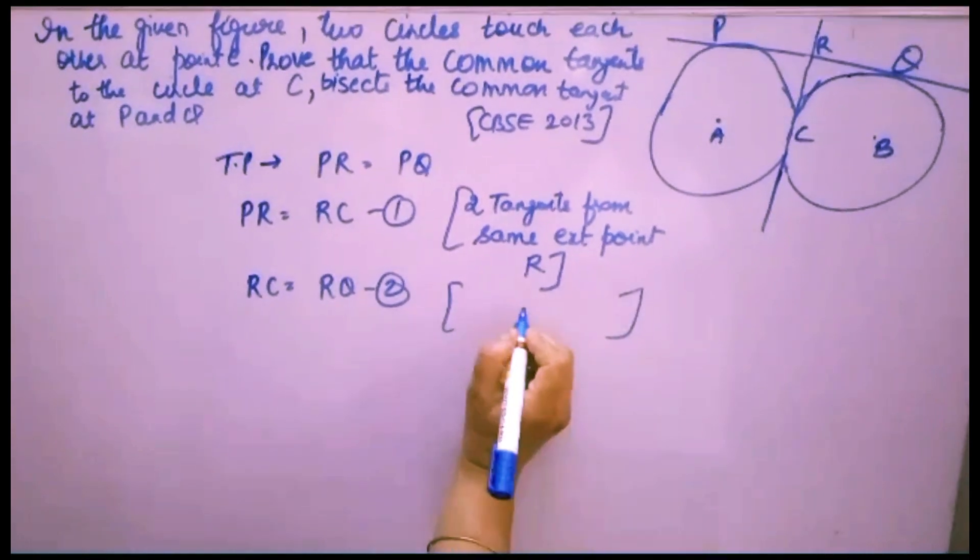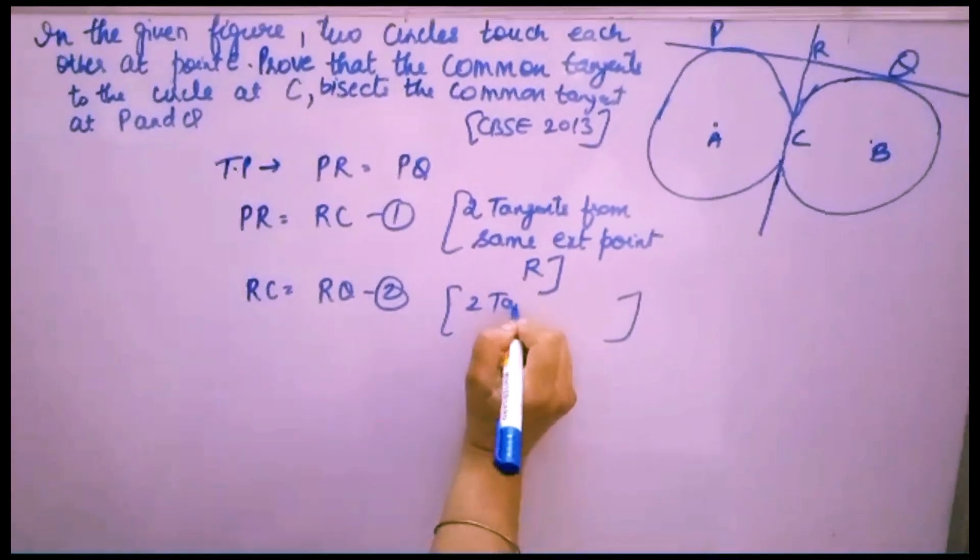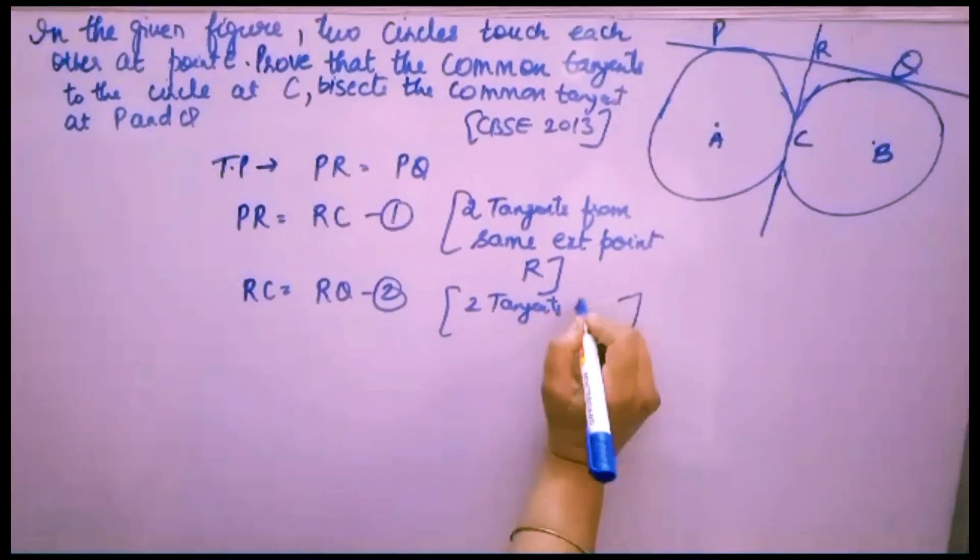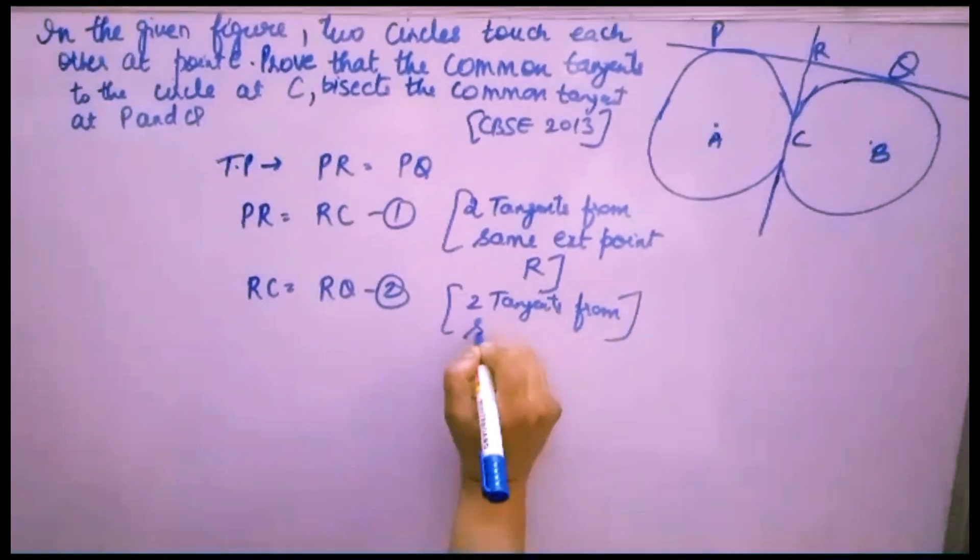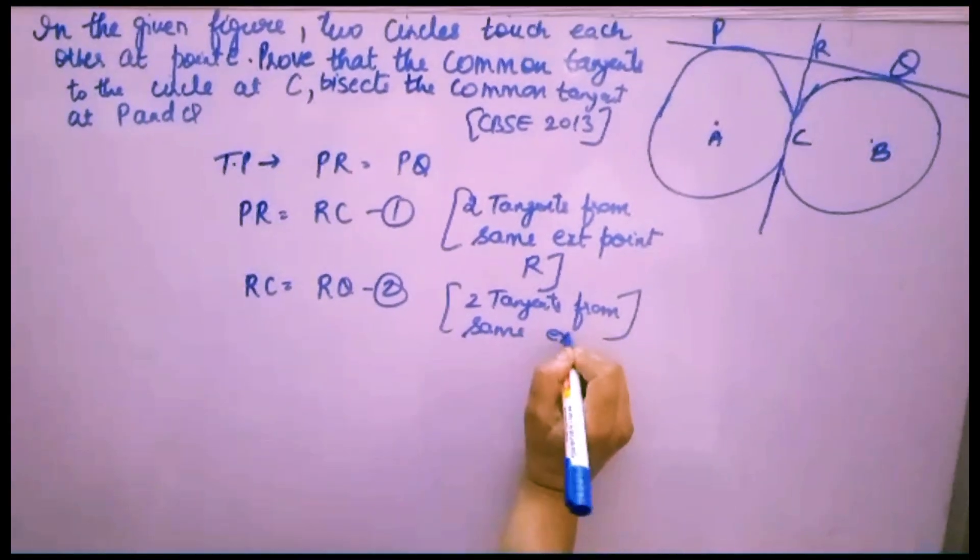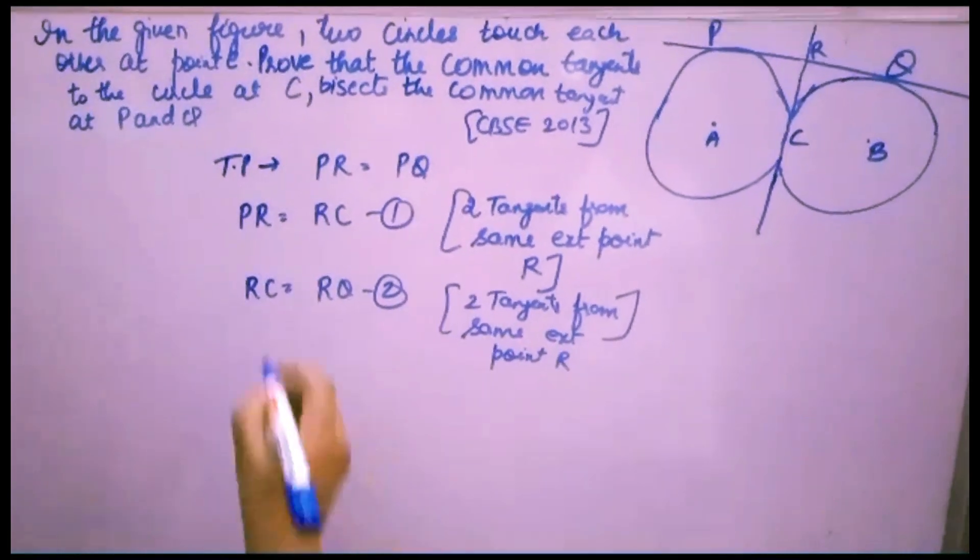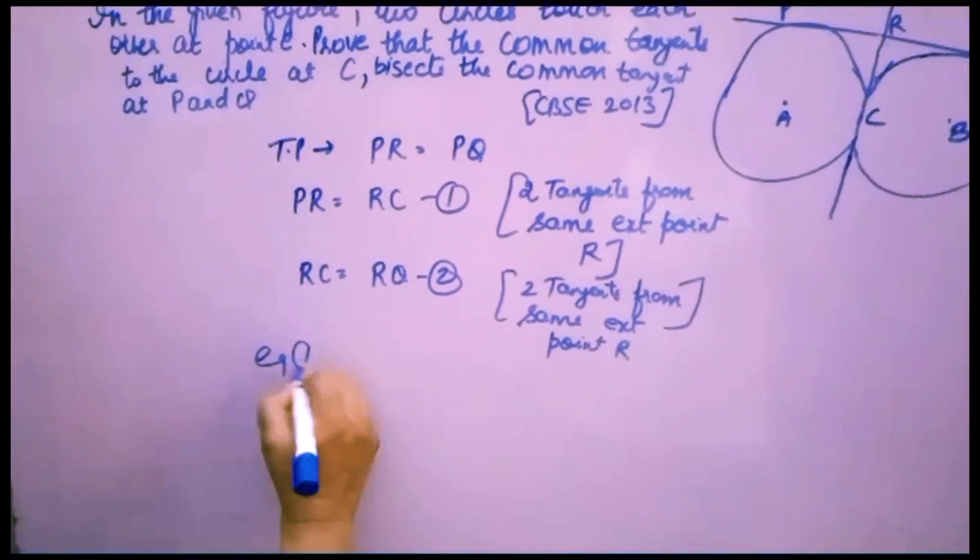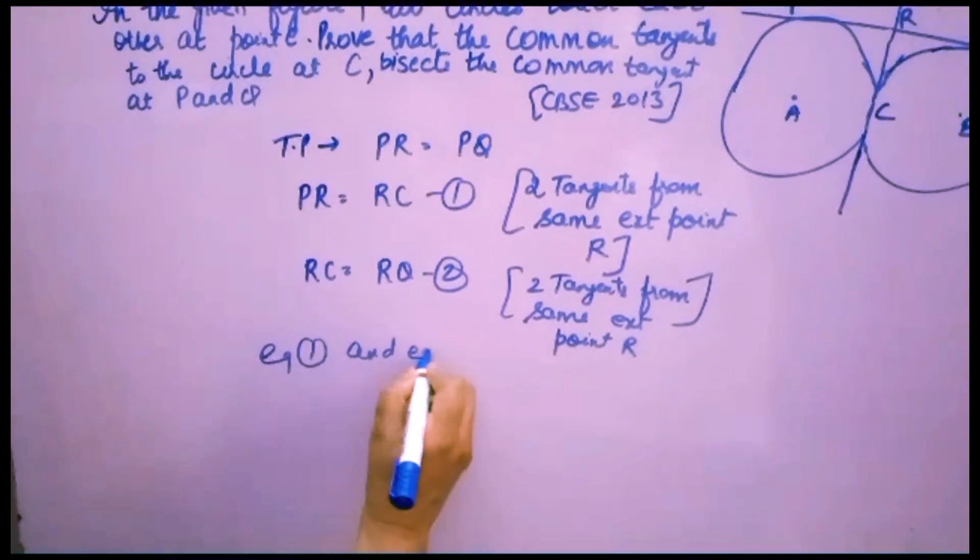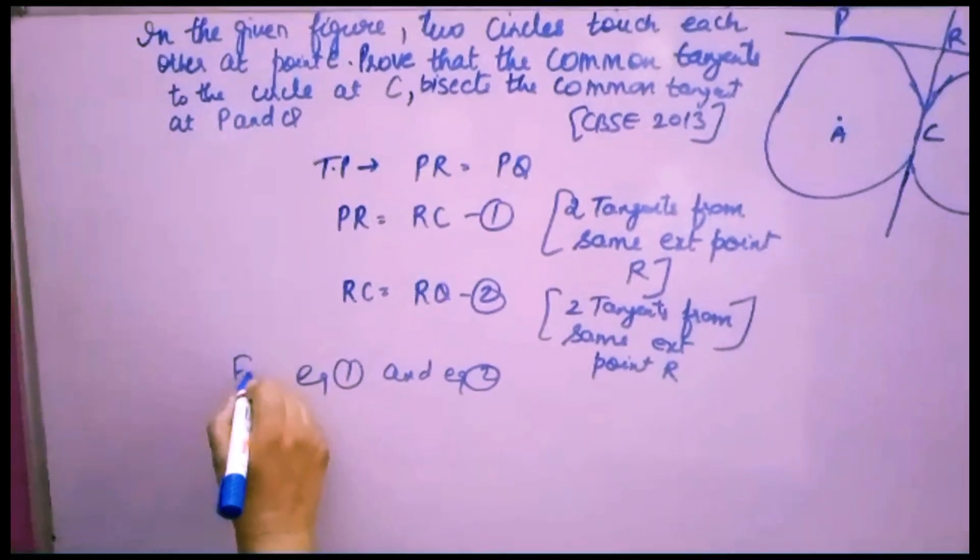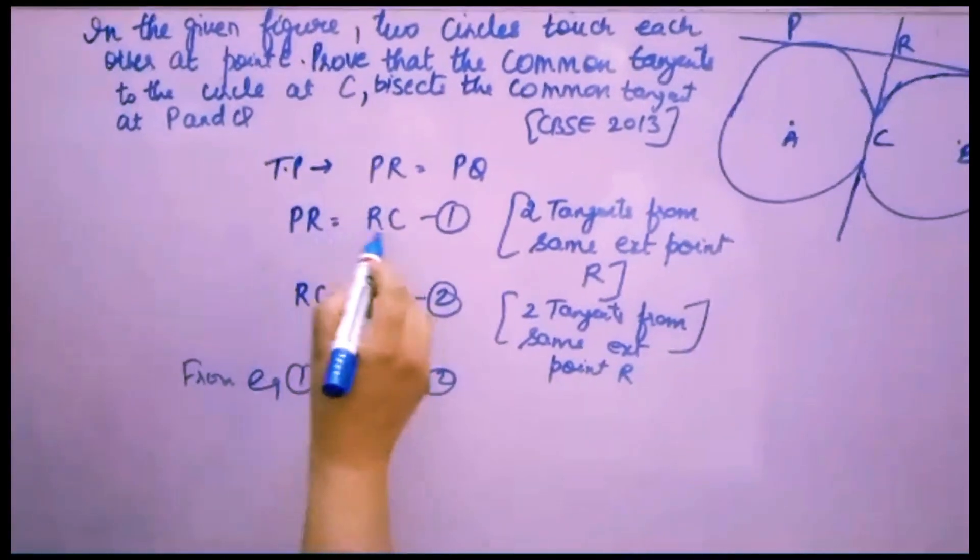Now from equation one and equation two, PR equals RC and RC equals RQ.